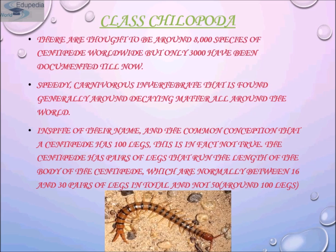Female centipedes lay an average of 60 eggs per clutch — compared to human females who lay just one egg. These eggs are coated in a sticky substance for protection. The female usually buries her eggs in the soil, and some species are known to nurse their eggs and baby centipedes. Centipedes are among the oldest animals on earth, having evolved millions of years ago; centipede fossils have been found dating over 400 million years old.